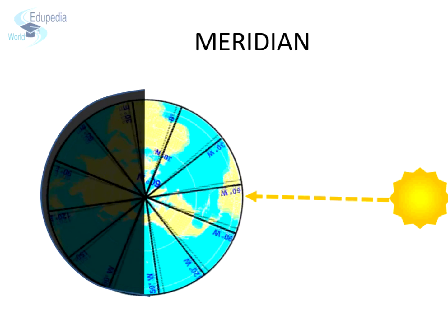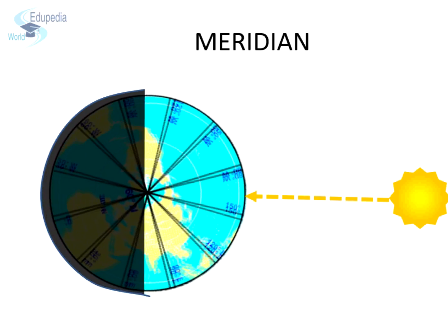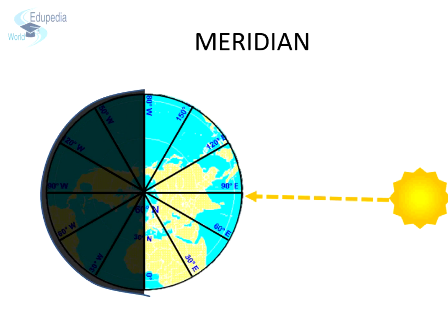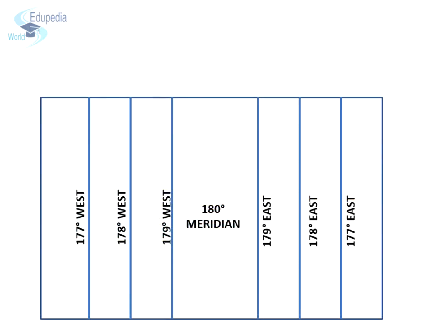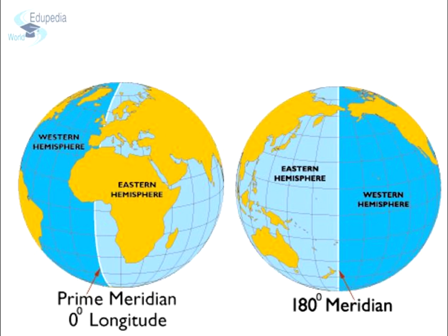As the earth is a sphere, there are a total of 360 degrees of longitude — 180 towards the east of the prime meridian and 180 towards the west. A point to note is that 180 degrees east and 180 degrees west are the same line. The prime meridian and the 180 degree meridian together make up a complete circle, dividing the earth into two hemispheres. Therefore, it is a great circle. Likewise, there are 179 other great circles formed by the lines of longitude.